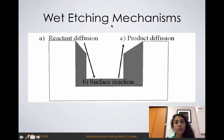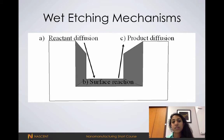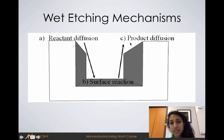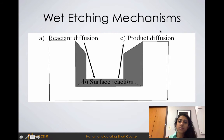For wet etching, we basically have a chemical bath and we immerse whatever material we're trying to etch in the chemical bath. The reactant will diffuse to the surface of the material, a reaction will take place, and the products will leave. Those are the three governing mechanisms.